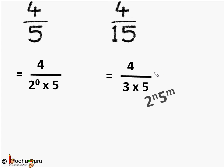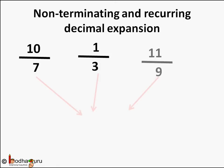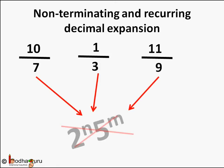For 4 by 15, the denominator 15 can be written as 3 into 5 — product of prime factors — but it is not of the form 2 to the power n into 5 to the power m. So the result of 4 by 15 will be a non-terminating recurring decimal number, that is 0.2666666... and so on. Take any rational number whose decimal expansion is non-terminating and recurring — you will find that the prime factorization of its denominator q is not in the form 2 to the power n into 5 to the power m.